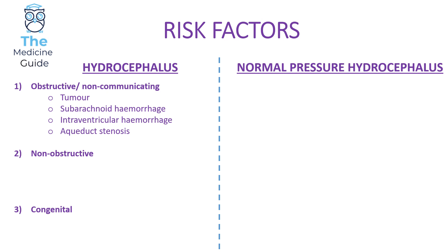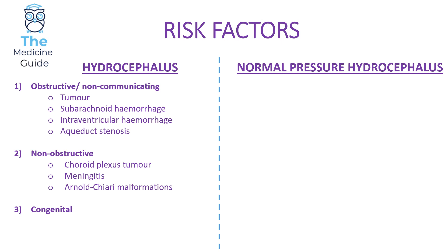A non-obstructive hydrocephalus is when there is blockage of CSF after it exits the ventricles, but CSF can still flow between ventricles. This might arise from a choroid plexus tumour, meningitis, or Arnold-Chiari malformation. Finally, a congenital hydrocephalus may arise from pre-eclampsia or alcohol abuse during pregnancy.